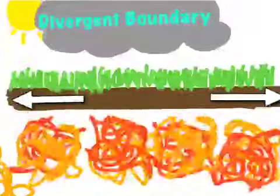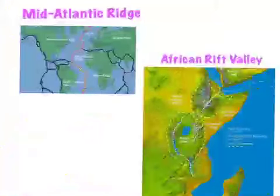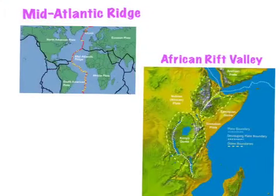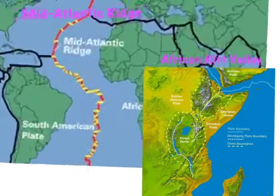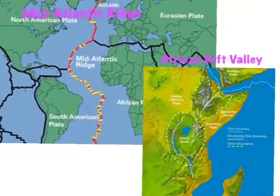The phenomena that occurs are volcanoes and earthquakes. Geographic locations where divergent boundaries are include the Mid-Atlantic Ridge and the African Rift Valley.